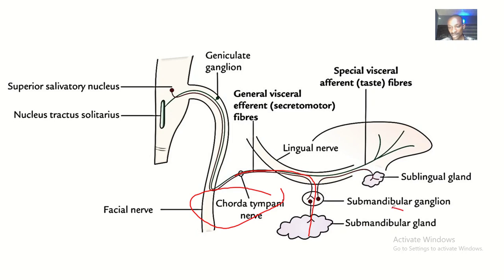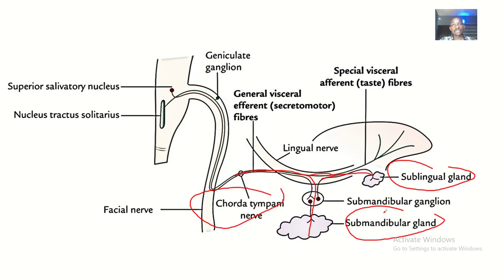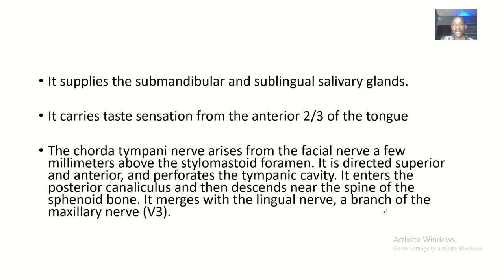Coming down here, one branch supplies the submandibular gland. Tracing the other branch coming down, it supplies the sublingual gland. So just from knowing the picture, we can see that the Chorda Tympani gives innervation to the submandibular gland and the sublingual gland — the submandibular and sublingual salivary glands.